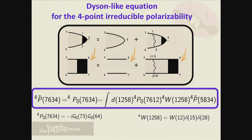But this is not the end, because to describe the propagation of the electron-hole and their interaction, we need a four-point quantity. You can imagine opening the holes and generalizing to a four-point polarizability tilde. At the end we obtain an equation for the irreducible polarizability including the electron-hole interaction inside - this is the independent polarizability, the RPA, and this is what we derived from doing a second iteration.